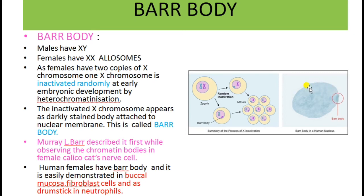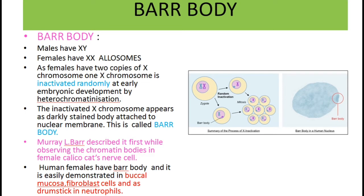The Barr body is present close to the nuclear membrane. In human beings, Barr bodies can also be demonstrated in buccal mucosa cells and fibroblast cells, and it appears as a drumstick in neutrophil cells.